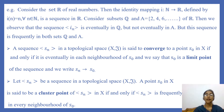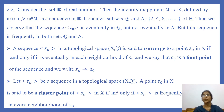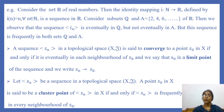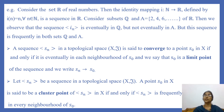Consider the set of real numbers R. The identity mapping I from the set of natural numbers N to R is defined by I(n) = n for every n in N, giving a sequence in R. Consider subsets Q (the set of all rational numbers) and A = {2, 4, 6, 8, ...} of R. We observe that the sequence I_n is eventually in Q because I(n) belongs to Q for all n greater than or equal to 1 — all terms belong to Q, so the sequence is eventually in Q.